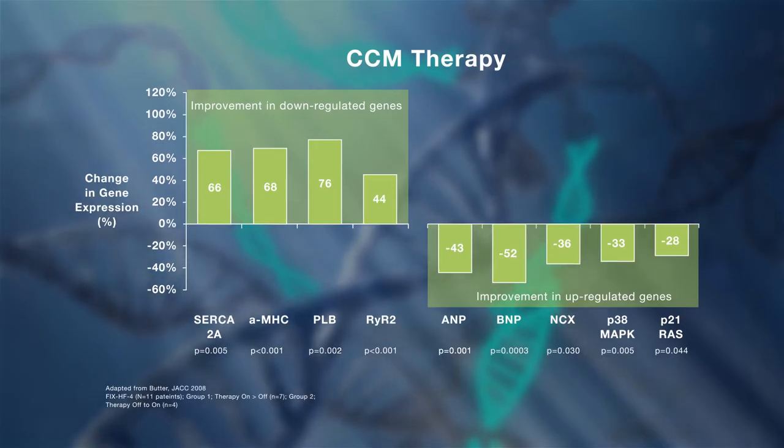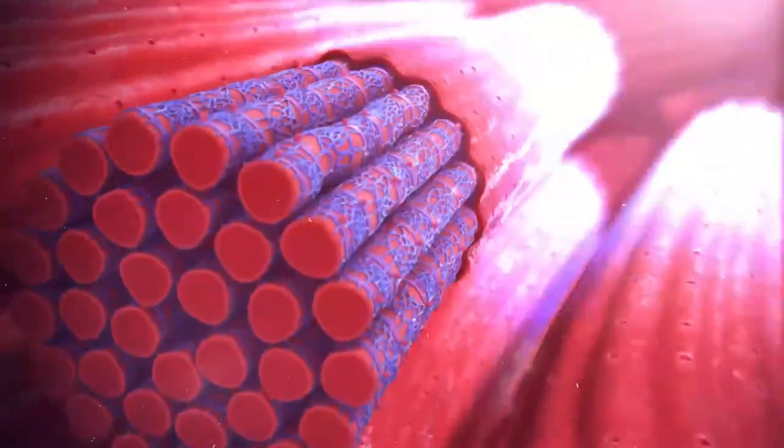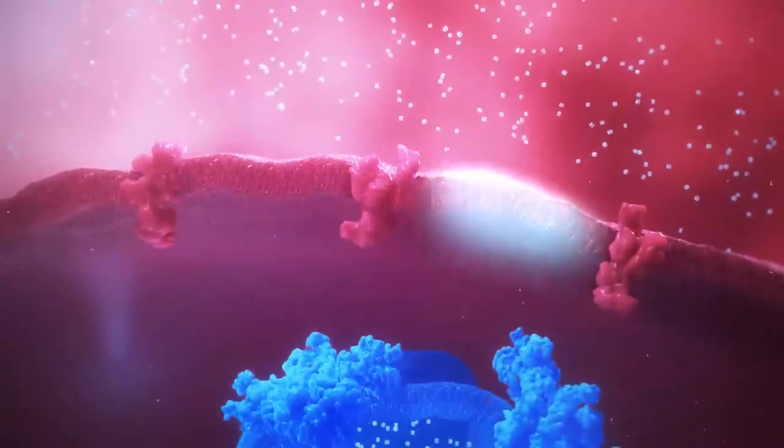In a normal cardiomyocyte, the cell membrane is depolarized as the action potential begins. This depolarization of the cell membrane triggers opening of L-type calcium channels on the cell surface.